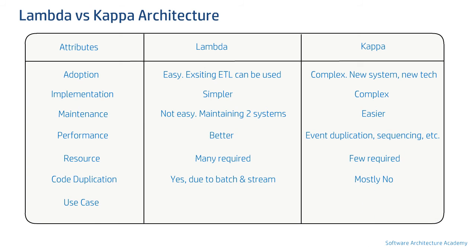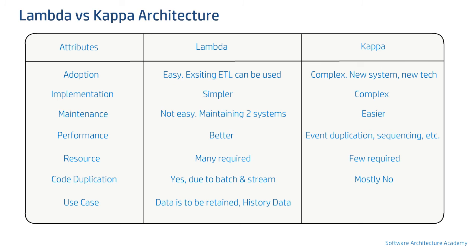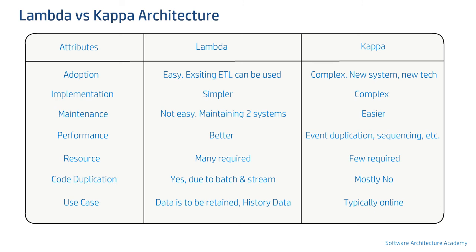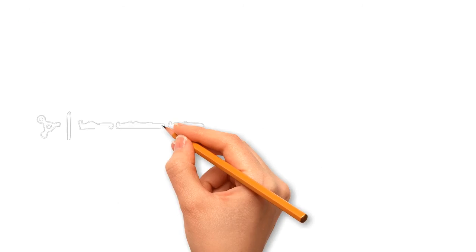Finally, the last factor is use cases. Lambda is used when there is a requirement to retain data, typically for regulatory or analytical purposes. On the other hand, Kappa architecture is well suited for use cases that use online data or where trusted data sources are available online.